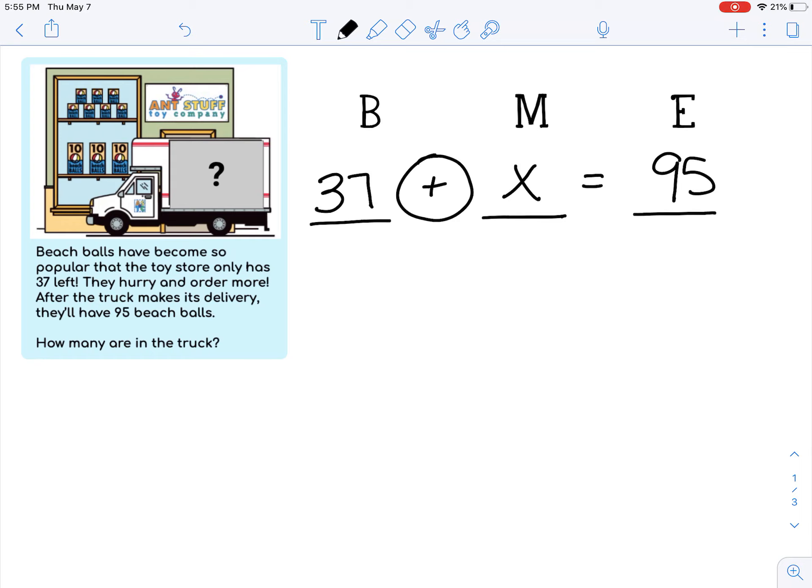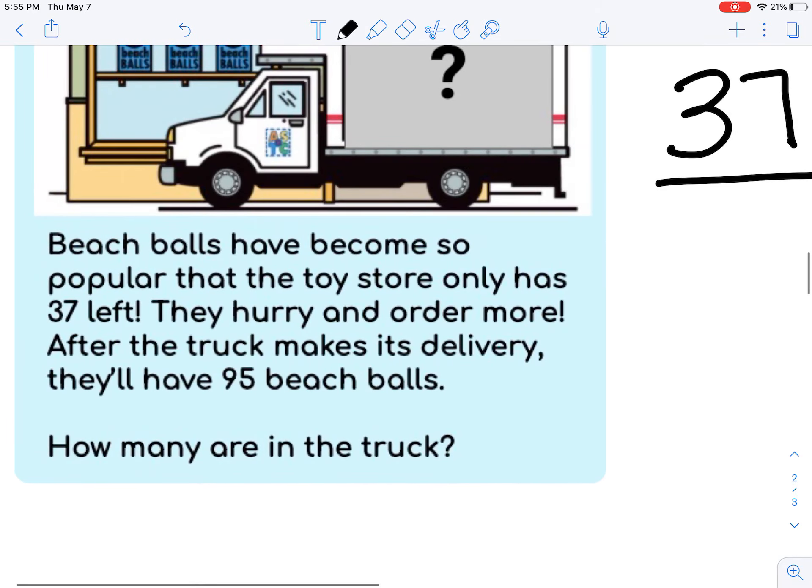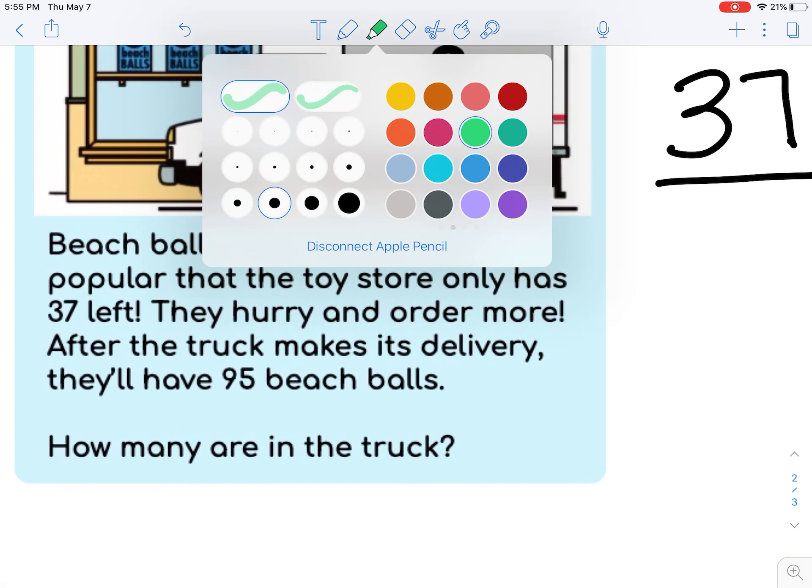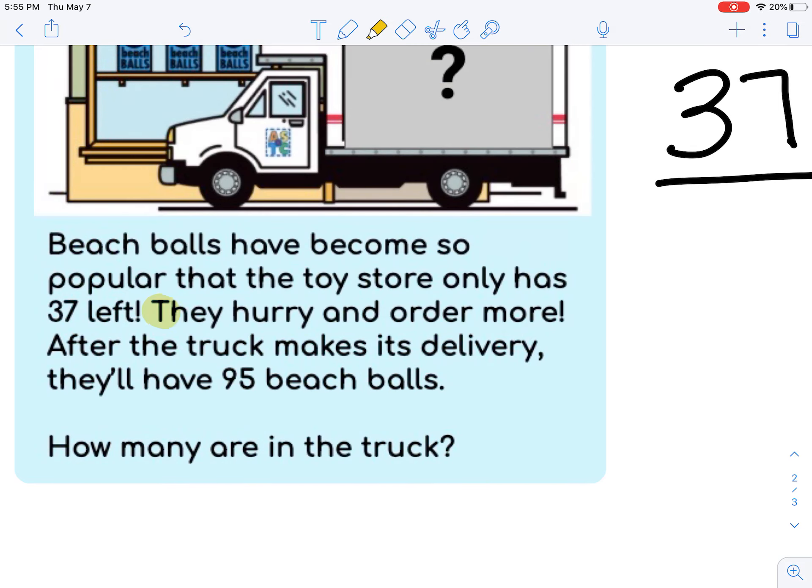So we already know that the toy store has 37 beach balls. That's why that went in the beginning. Then it says that they hurry and order more. So they don't actually tell us how many more that they order, do they? No, they just said they hurry and order more. After the truck makes its delivery, they'll have 95.